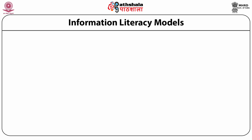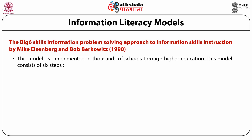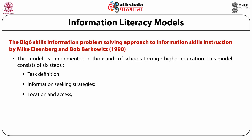There are various accepted information literacy models. The important one is the Big 6 model — the Big 6 Skills Information Problem Solving Approach to Information Skills Instruction by Mike Eisenberg and Bob Berkowitz, given in 1990. This model is implemented in thousands of schools through higher education. This model consists of six steps: first step is Task Definition, second step is Information Seeking Strategies, third step is Location and Access, fourth step is Use of Information, fifth step is Synthesis, and the sixth step is Evaluation.